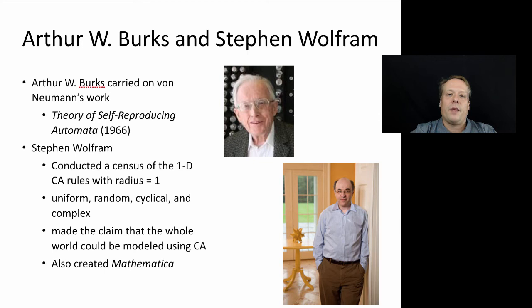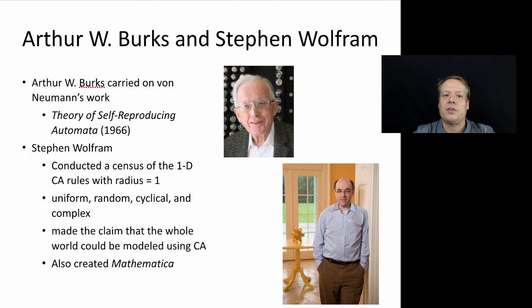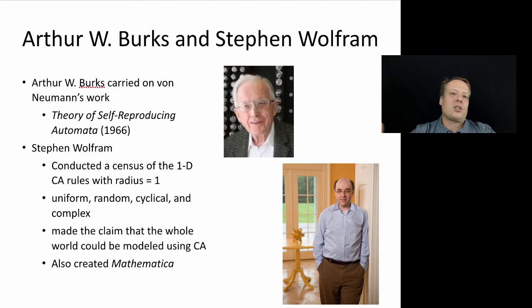At about the time that Conway was doing his earliest work on the Game of Life, Arthur Burks — one of John von Neumann's students — picked up von Neumann's collected essays on cellular automata and edited them down. In 1966 he released a book called 'The Theory of Self-reproducing Automata,' which contained many of von Neumann's thoughts and the formal theoretical proofs necessary to describe cellular automata and their power. An important point about this book is that it describes cellular automata and self-reproducing systems as an existence proof — if we can do it in software, we can do it in real hardware.